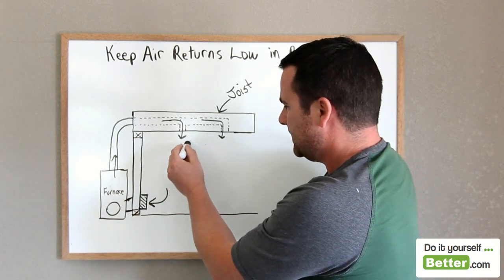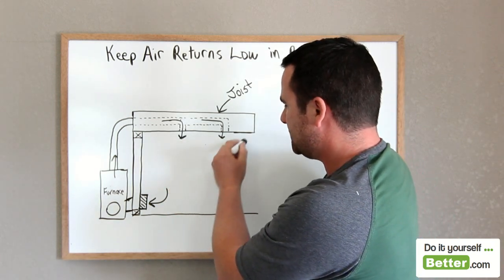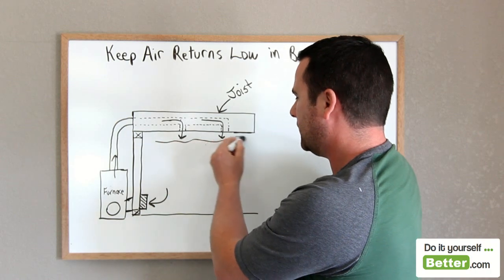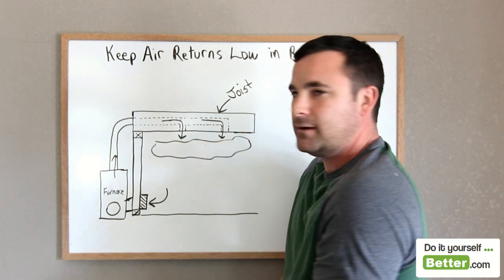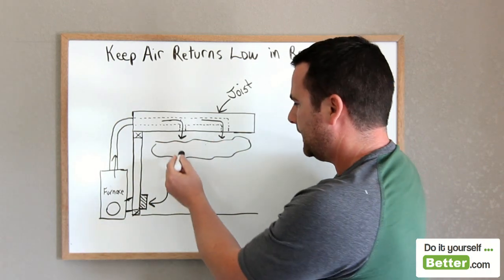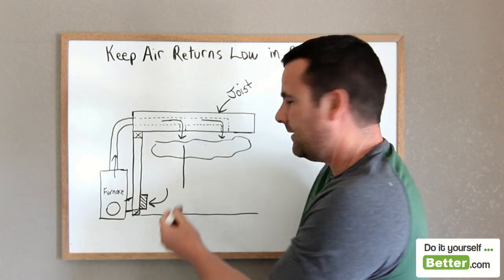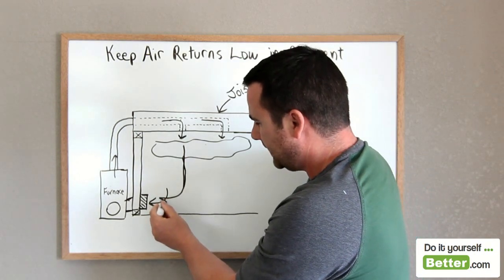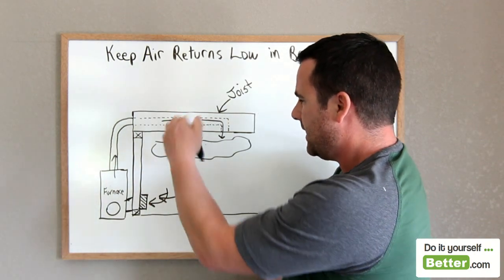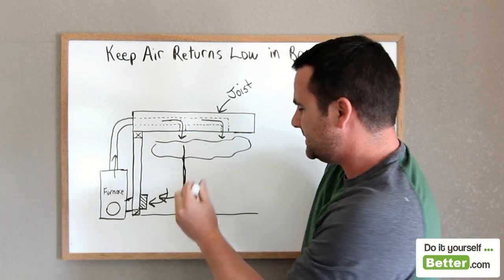Now what happens is this is hot. Your hot air has been sitting up in your ceiling the whole time. Your furnace kicks in. Now it pulls and forces the hot air down and into your air return, and it just circulates.